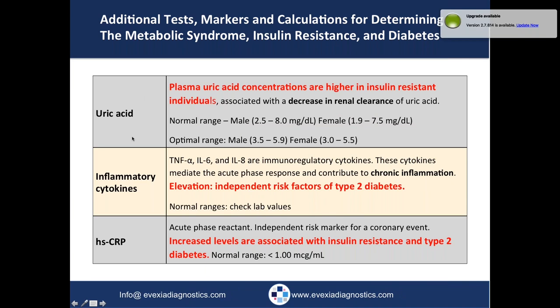Other tests to consider: uric acid — plasma uric acid concentrations are higher in insulin-resistant individuals, potentially due to kidney damage and decreased clearance. Inflammatory cytokines can also be tested; if there's inflammation, there's an increased risk of type 2 diabetes due to oxidative stress and tissue damage. You definitely want to do high-sensitivity C-reactive protein (hs-CRP) — it's an independent marker for cardiovascular disease and is also associated with insulin resistance and diabetes. The two conditions are interconnected — blood sugar dysregulation damages the endothelial cells of the cardiovascular system.